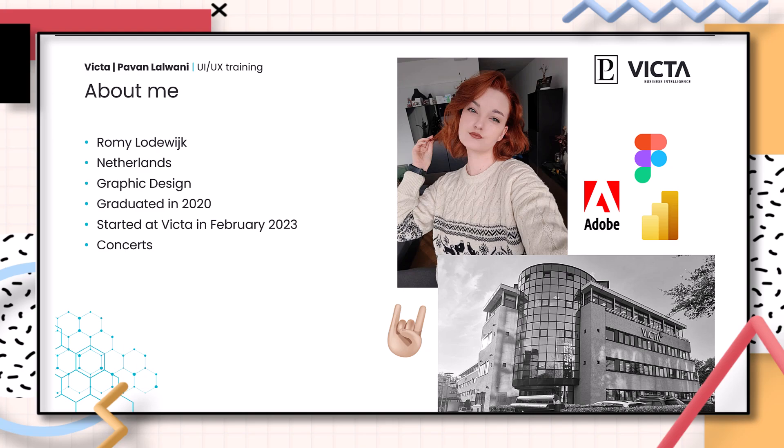But first, let me tell you a little bit about myself. My name is Romy Lodewijk. I am from the Netherlands and studied graphic design, graduating in 2020. Then I made a switch to BI and started working at VICTA in February 2023. And in my spare time, I like to go to concerts because I'm a big music lover. So now you know a little bit about me, and let's get started with the training, shall we?